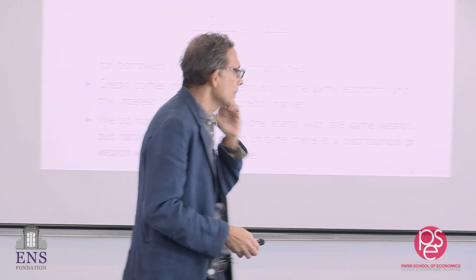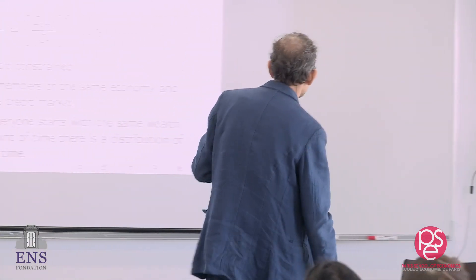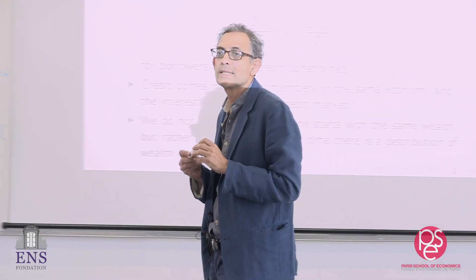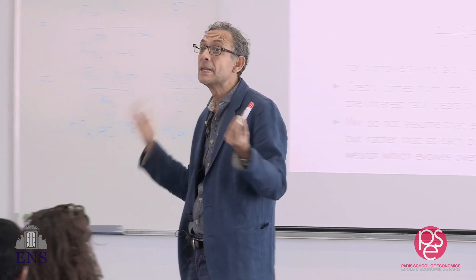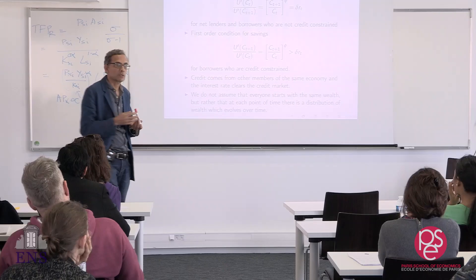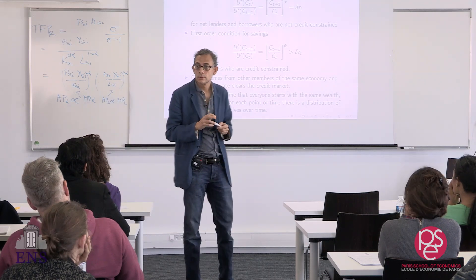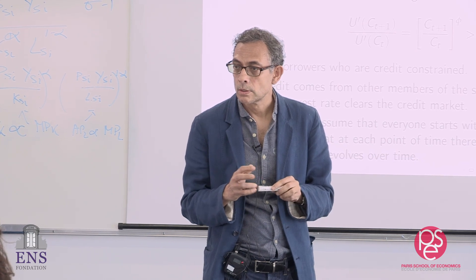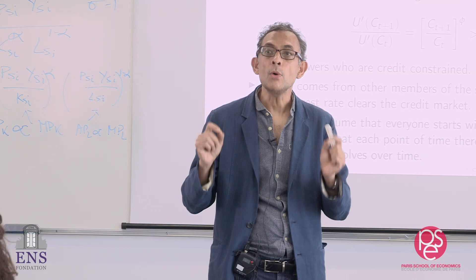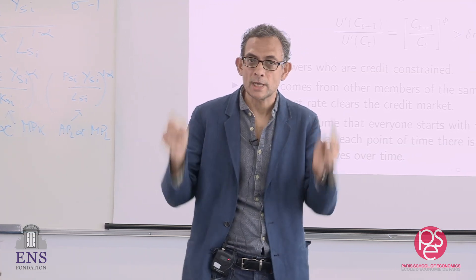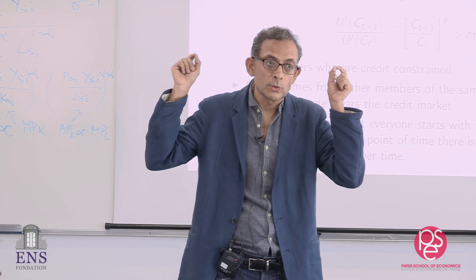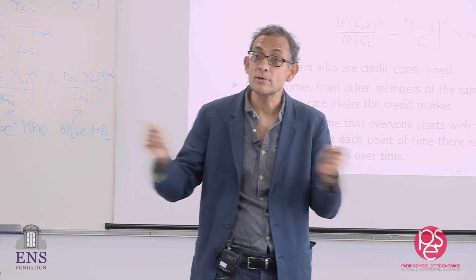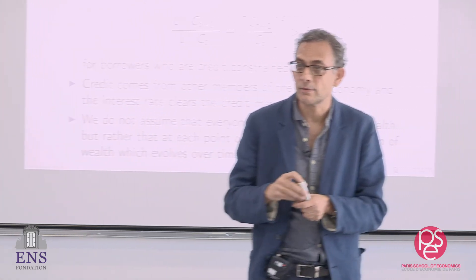I'm going to skip the slides and walk you through the logic. Take a situation first where there is diminishing returns in production — a concave production function. I'm going to start with a concave function, then move to a convex function. We'll do every possible case. Let's start with a linear function. With a linear function, who will be credit constrained — the poor or the rich, low wealth or high wealth? Everybody's identical in every other way.